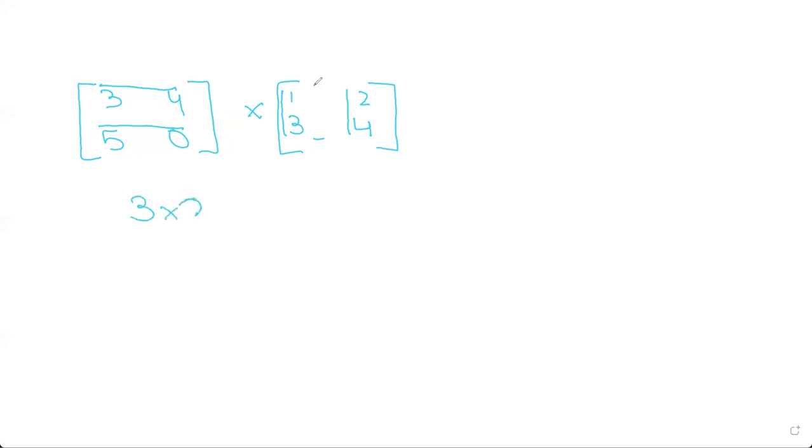3 into 1 plus 4 into 3. And then you do 3 into 2 plus 4 into 4. 3 into 2, this 3 into this 2, plus this 4 into this 4. And then you do 5 into 1 plus 0 into 3, and then 5 into 2 plus 0 into 4.